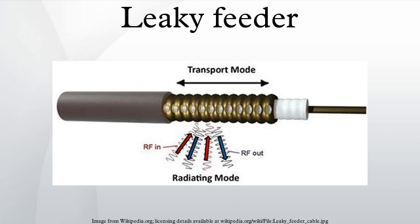Principle of operation: a leaky feeder communications system consists of a coaxial cable run along tunnels which emits and receives radio waves, functioning as an extended antenna. The cable is leaky in that it has gaps or slots in its outer conductor to allow the radio signal to leak into or out of the cable along its entire length.